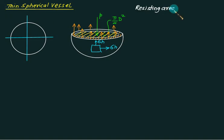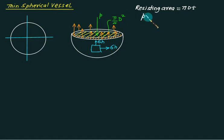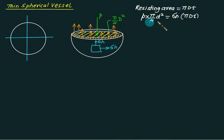The resisting area is π × D × T. We balance the pressure force equal to the strength of the material: P × (π/4) × D² = σ_hoop × resisting area, that is π × D × T. Solving this, you get hoop stress equal to P × D divided by 4T.